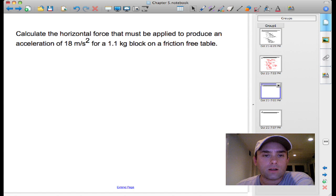Okay, so here we have another force mass acceleration problem. This question is asking, calculate the horizontal force that must be applied to produce an acceleration of 18 meters per second squared for a 1.1 kilogram block on a friction free table.